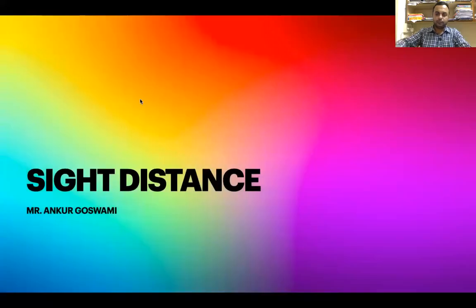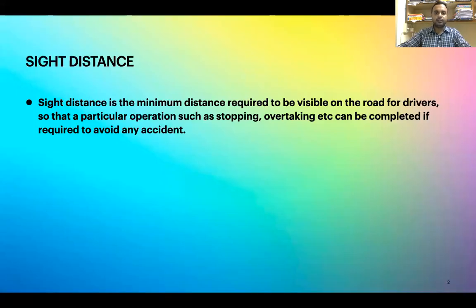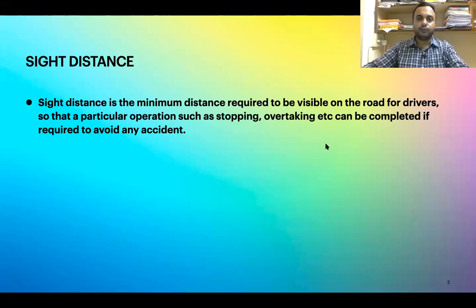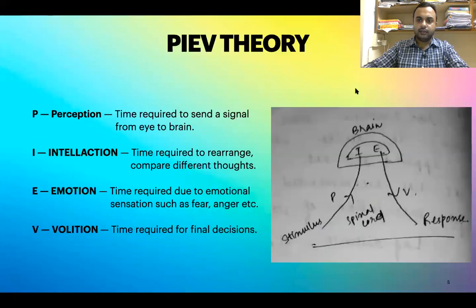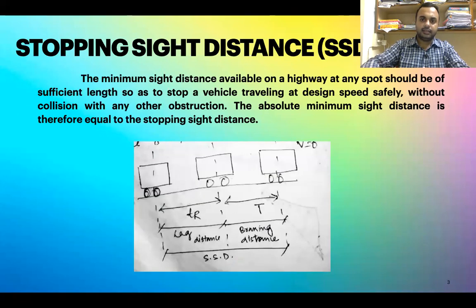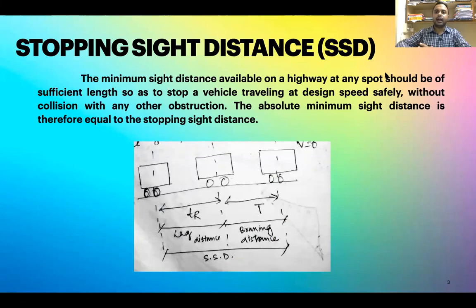Sight distance is the minimum distance required to be visible on the road for drivers so that a particular operation such as stopping or overtaking can be completed, if required, to avoid any kind of accident. The stopping sight distance, or SSD, is the minimum distance available on a highway at any spot which should be sufficient to stop a vehicle traveling at design speed safely without collision.